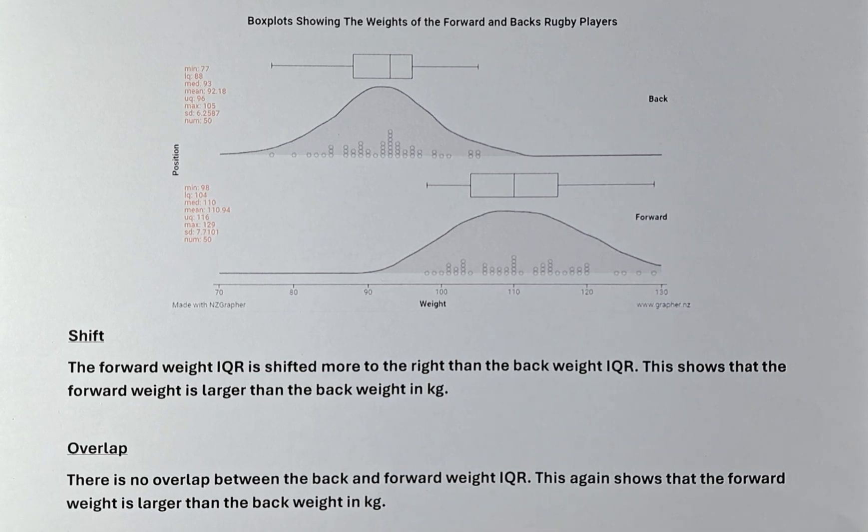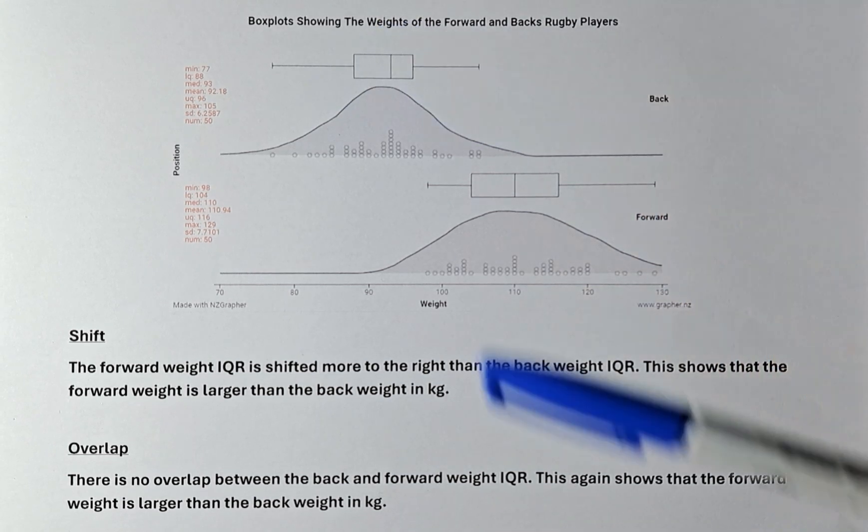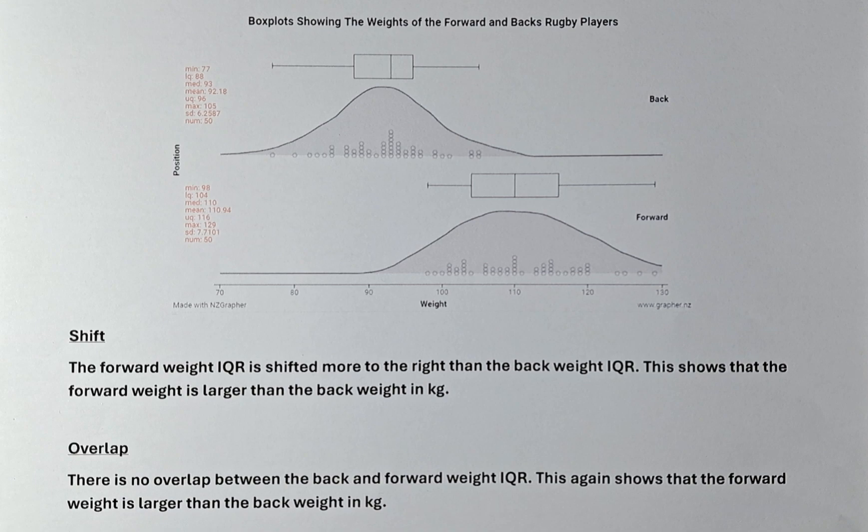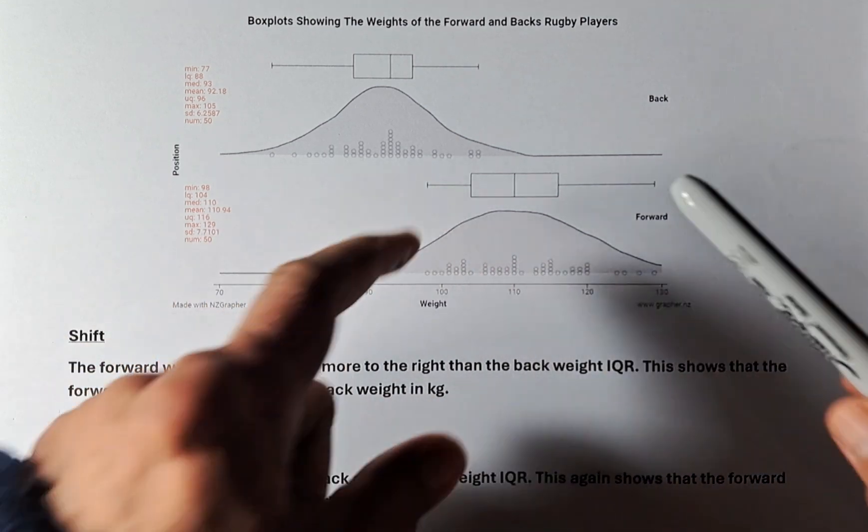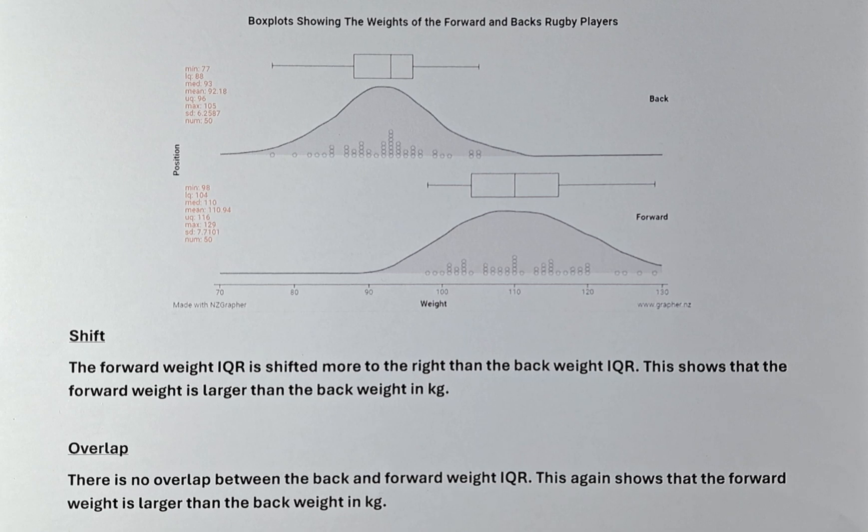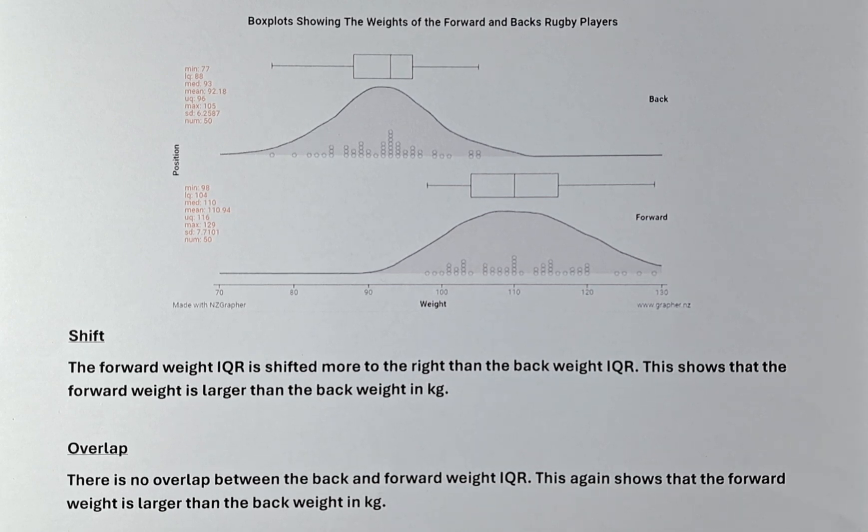In both cases, we are now going to look at the box or the IQR of both the back and the forward. We are not interested in the whiskers, so we are concentrating on only the box, also called the middle 50% or the interquartile range.